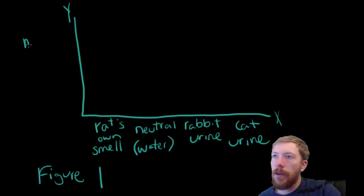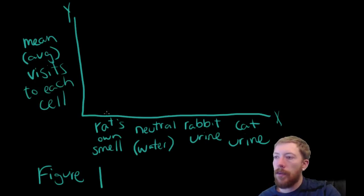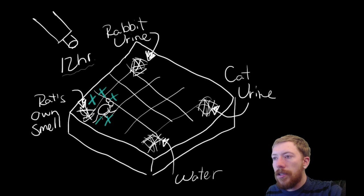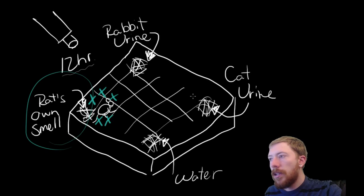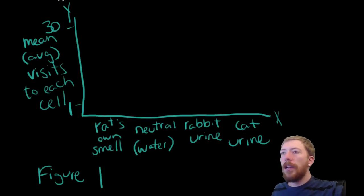Then, on the y-axis, what we have is the mean, or the average, number of visits made to each cell. So, for instance, if a rat visits its own corner, it'll be marked as one here. And I think they go up to about 30 cell visits. So, let me show you what I'm talking about. What they mean is, how often is a rat hanging out in these areas? So, these would all be marked as the rat's own smell. Whereas, over here, these would be marked as the rat visiting the cat urine. And here is neutral, and so on. So, that's what's being represented in this figure.